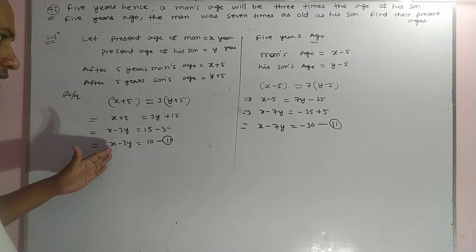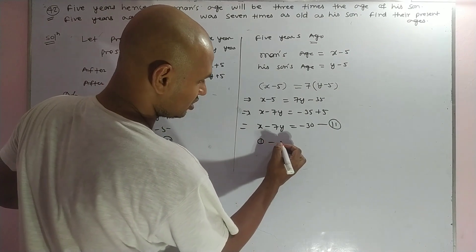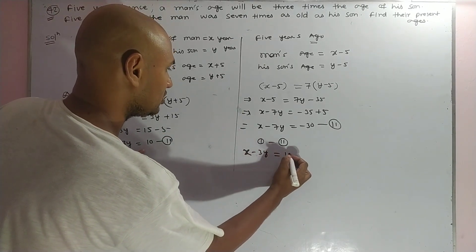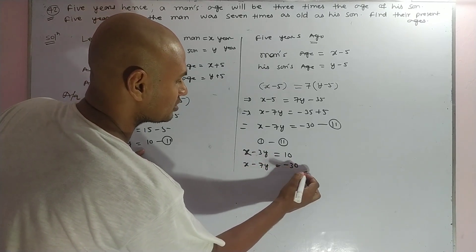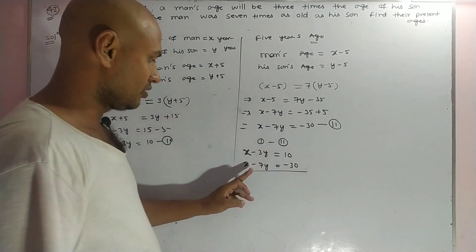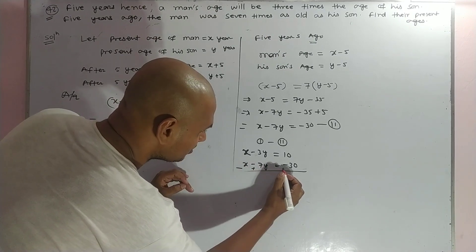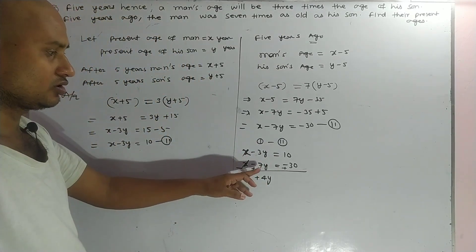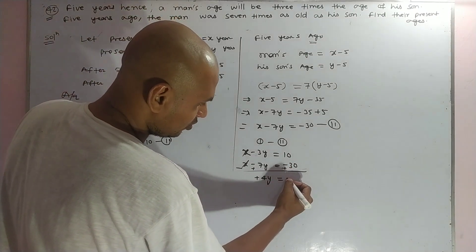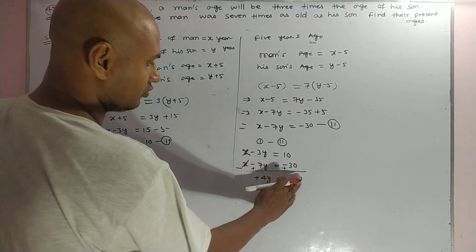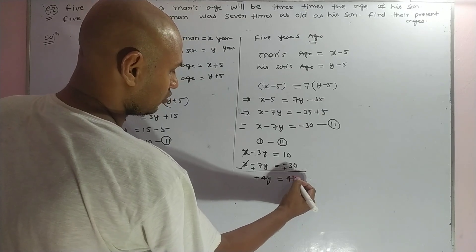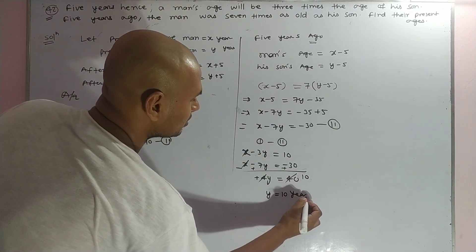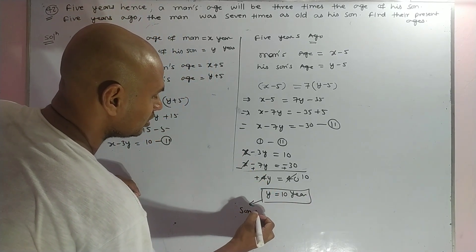Now, since both equations have x, we subtract Equation two from Equation one. x minus three y equals ten, minus x minus seven y equals minus thirty. The x terms cancel. Seven minus three gives four y, and ten minus negative thirty gives forty. So four y equals forty, and y equals ten years. This is the son's age.